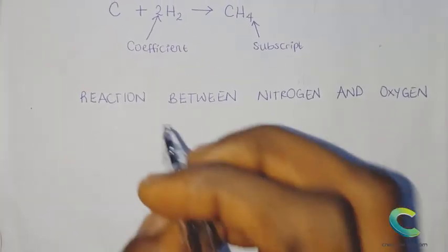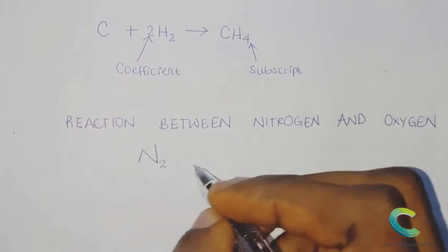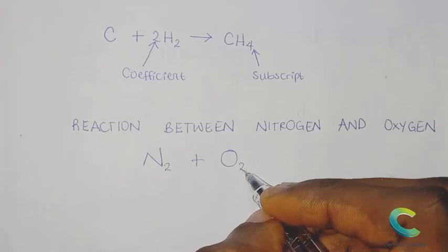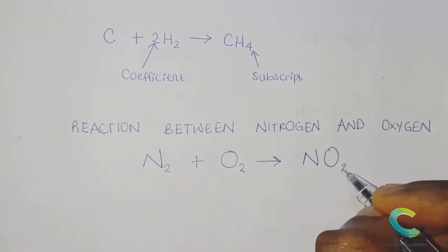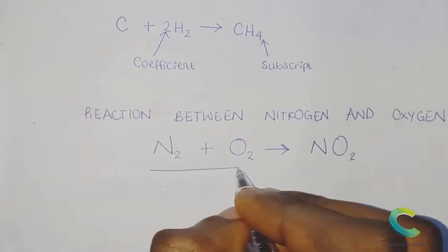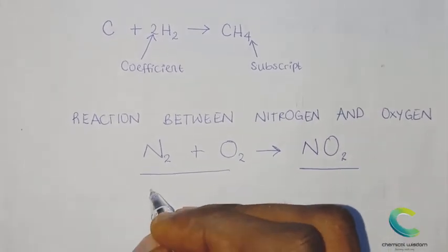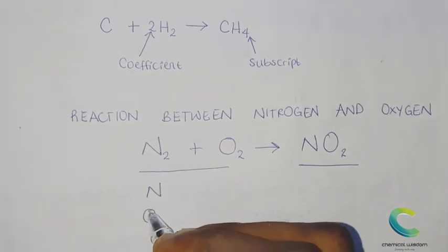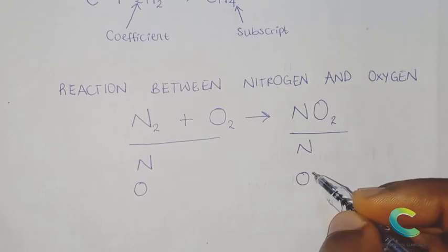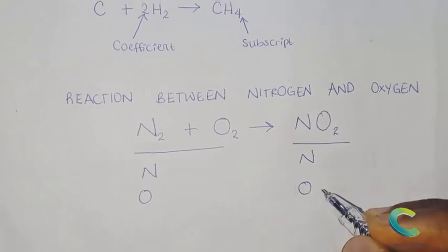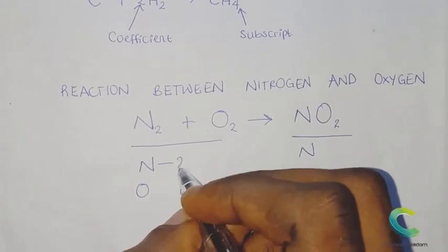For example, the reaction between nitrogen and oxygen to produce nitrogen dioxide: N₂ + O₂ → NO₂. Step one says list out the number of atoms on both sides. On the left-hand side we have nitrogen and oxygen; on the right-hand side we also have nitrogen and oxygen.